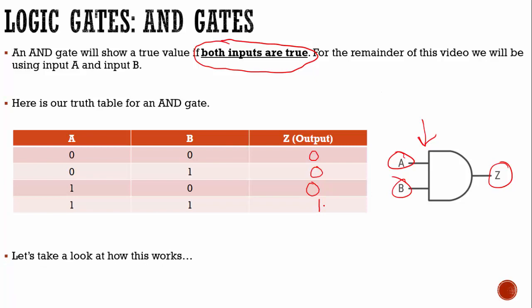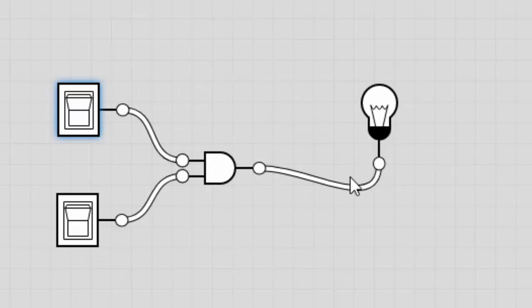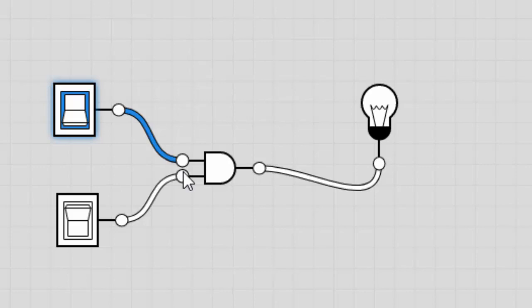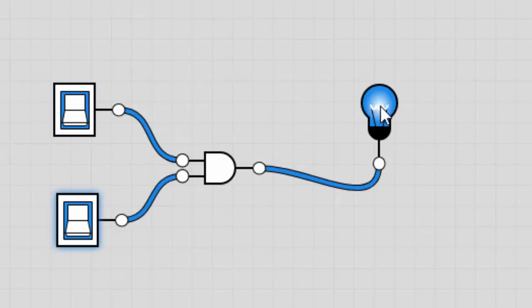Let's take a look and see how this works. We have two inputs — input A and input B — connected to an AND gate, and the AND gate is attached to a light bulb. This light bulb should only turn on if A and B are both active. When I activate A, it's active but the light bulb is not lighting up. I can also activate B — it is active but the light bulb is still not lighting up. When both are off it's not lighting up. When we flip both so A and B are both true, our light bulb lights up.